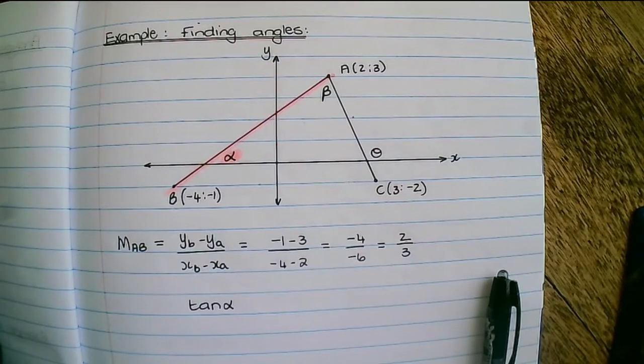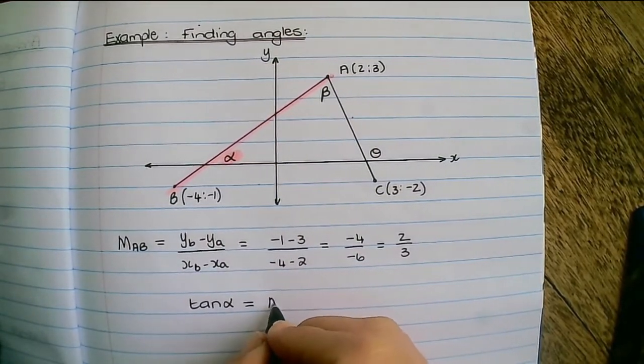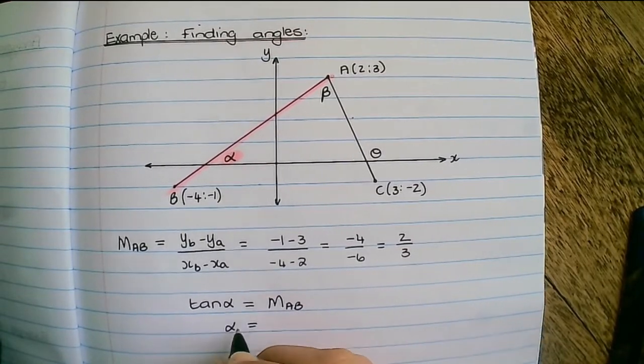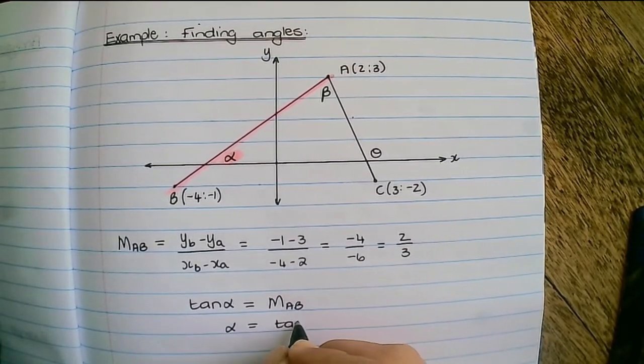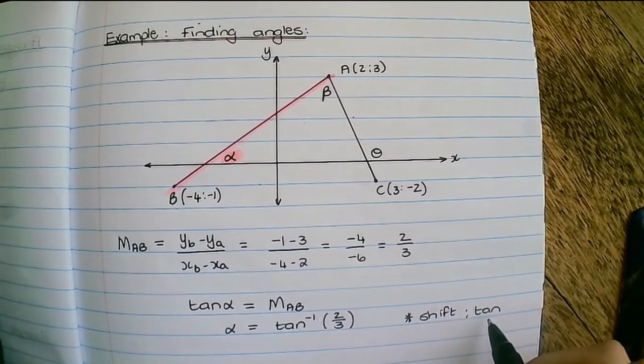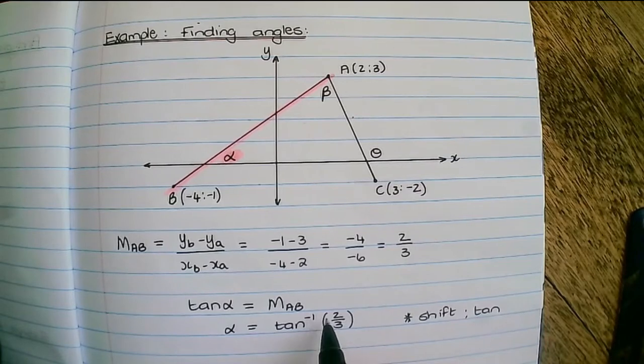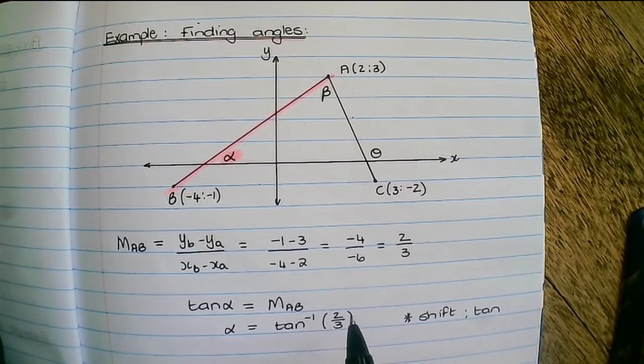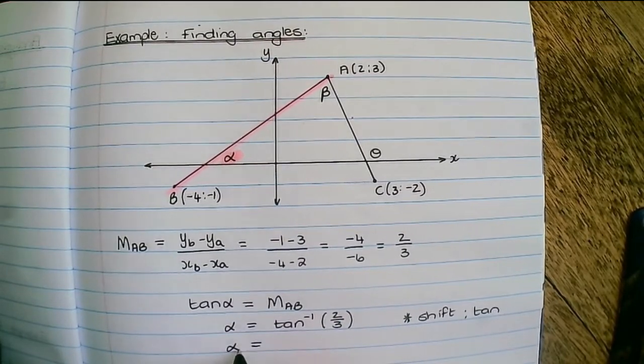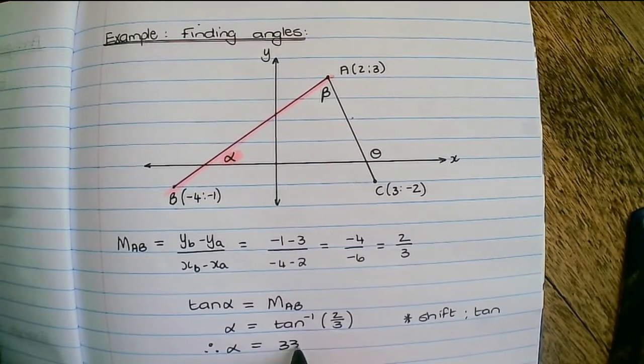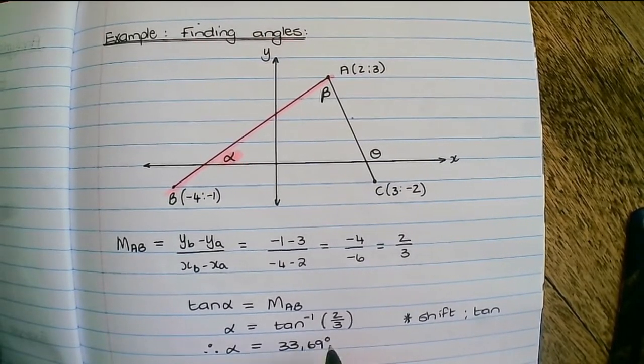So the tan of alpha is equal to the gradient of line AB. And if I use the inverse tan function on the calculator, so if you press shift tan if you have a Casio calculator, you would find that it goes into the inverse function. And now you just put in the two thirds and you can find alpha. So therefore alpha is equal to 33.69 degrees.